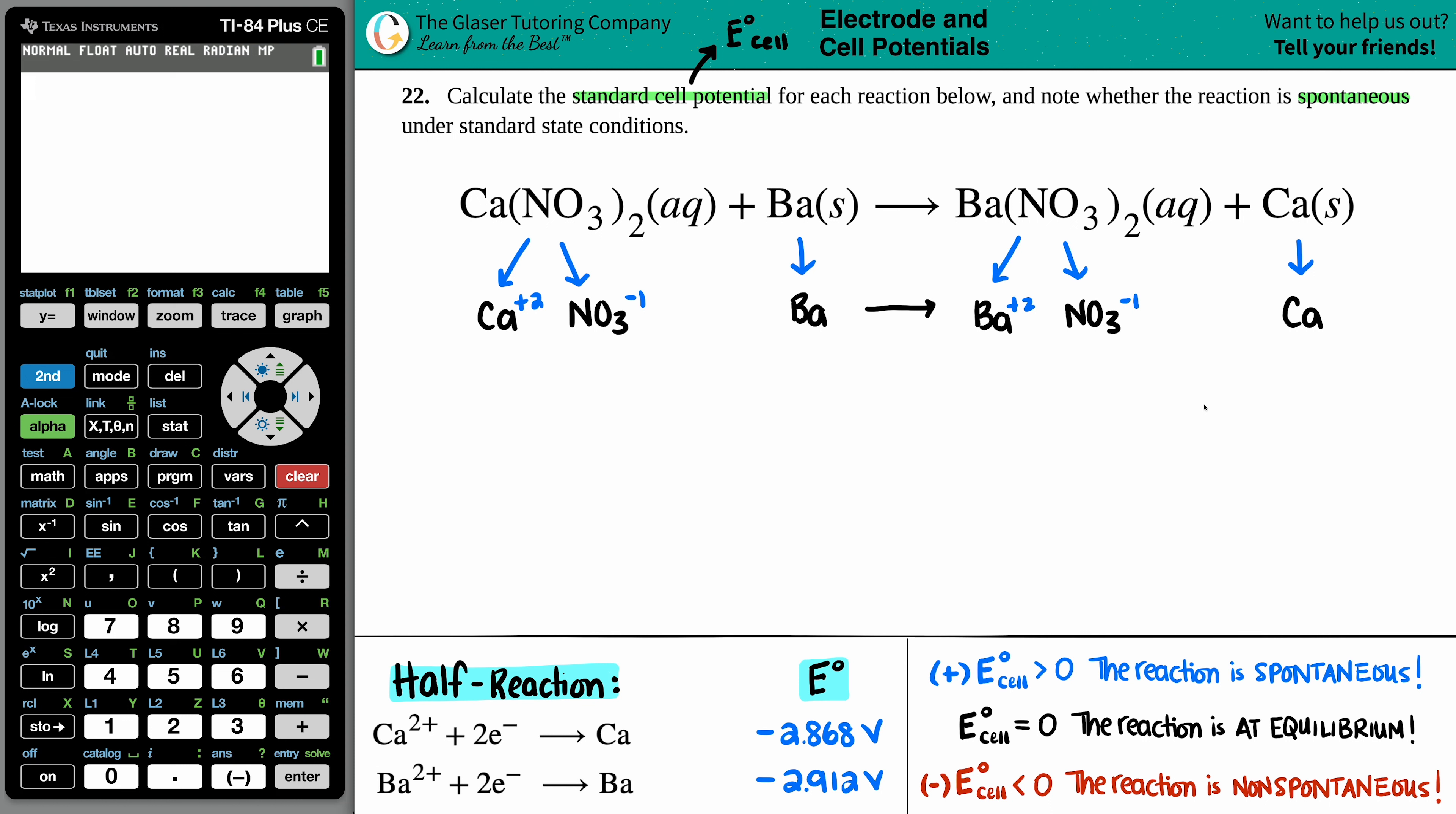Now remember, oxidation reactions are ions that change state, change charges. So if I look at my NO3 minus, and it goes to an NO3 minus, there was no change. So this is not part of the oxidation reduction reaction. Don't even bother looking at it.